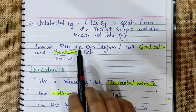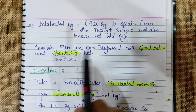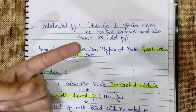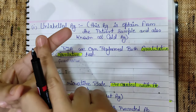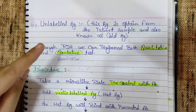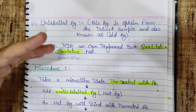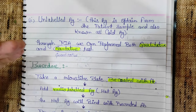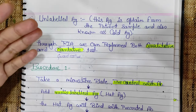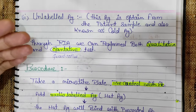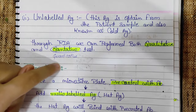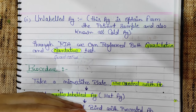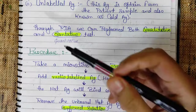Through RIA, we can perform both qualitative and quantitative tests. Qualitative means positive or negative result. Quantitative means determining the concentration. We have seen that the intensity of radioactive material is directly proportional to the concentration of cold antigen in the patient sample — that is the quantitative test.